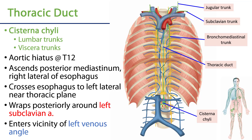The thoracic duct is going to ascend the retroperitoneal space of the abdominal cavity, traveling through the aortic hiatus at the T12 level with the descending aorta. As it moves in the posterior mediastinum, it's typically going to be sandwiched between the esophagus, which will be left lateral to the thoracic duct, and the azygous vein. So look for the duct intermediate between the esophagus and the azygous.